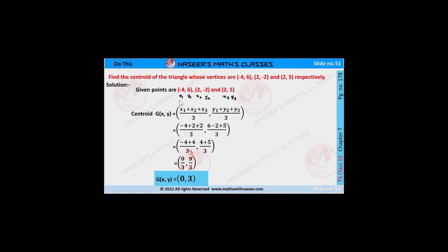If the given points are minus 4 comma 6, 2 comma minus 2, and 2 comma 5, then we substitute these values in the centroid formula. Then we get: minus 4 plus 2 plus 2 by 3, and 6 minus 2 plus 5 by 3.